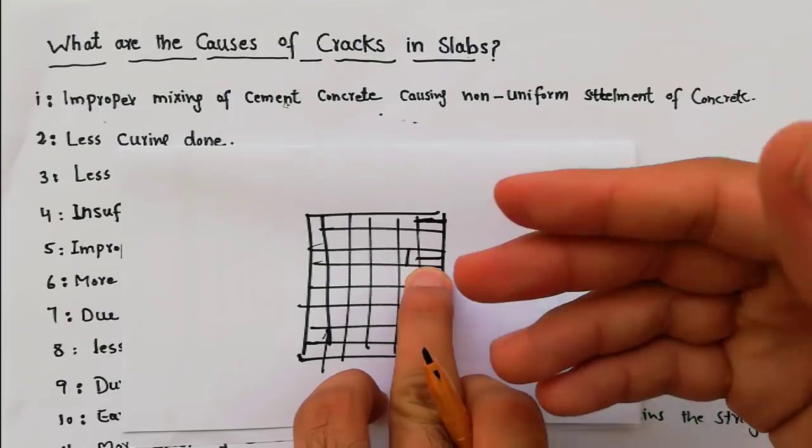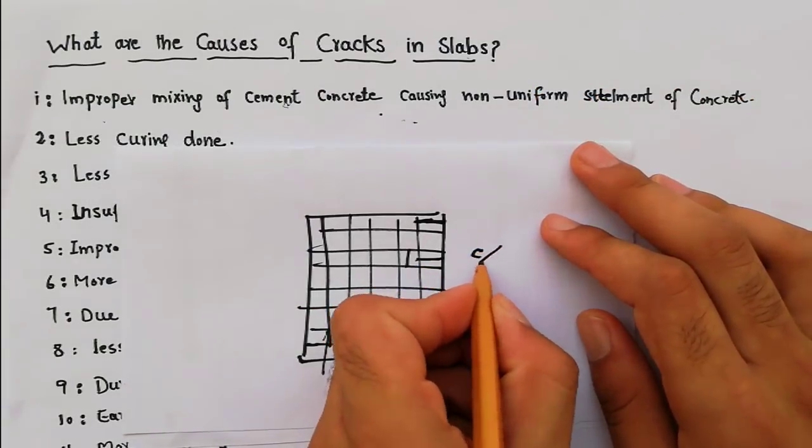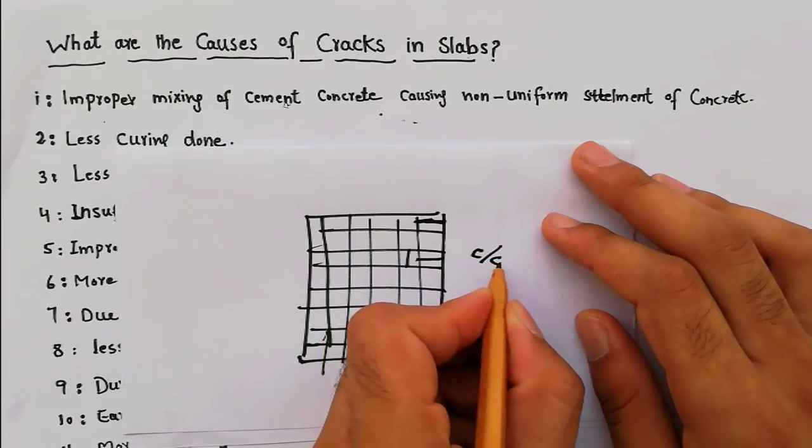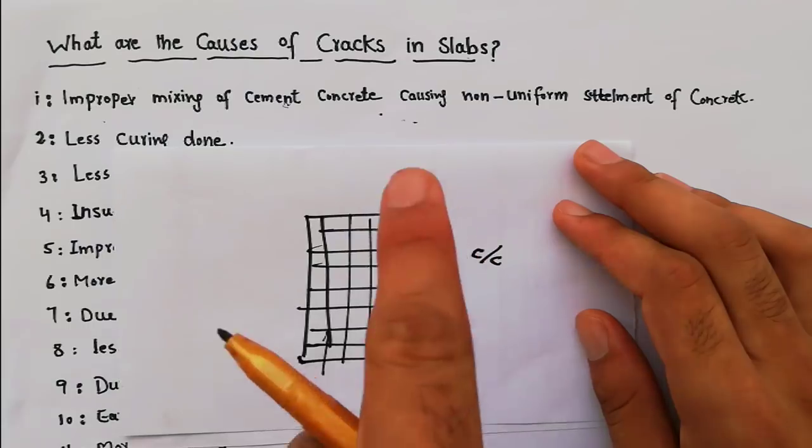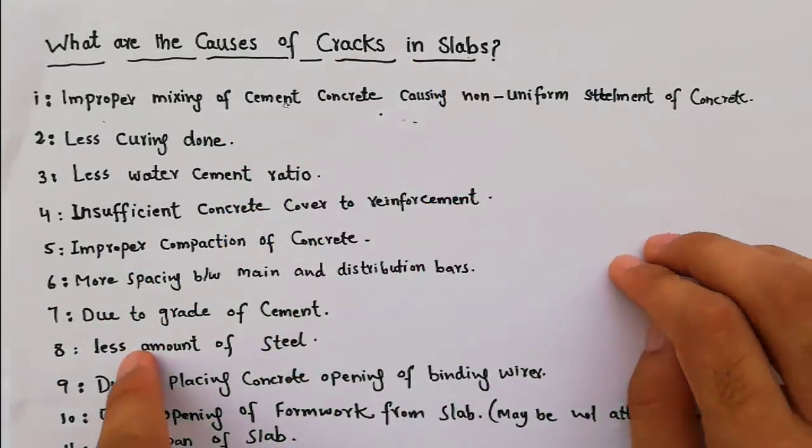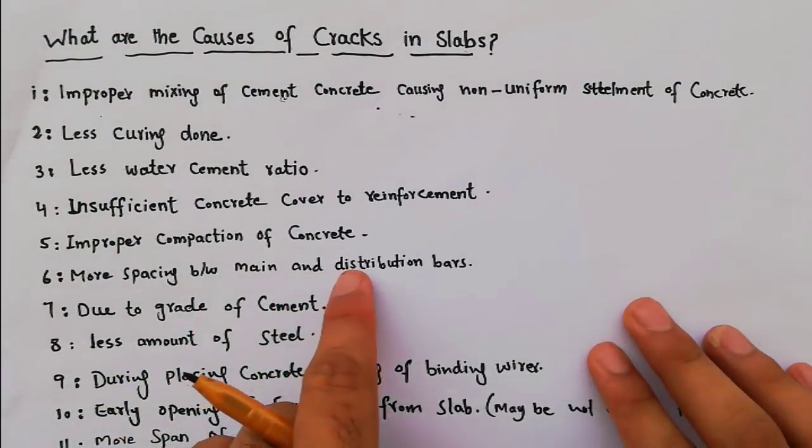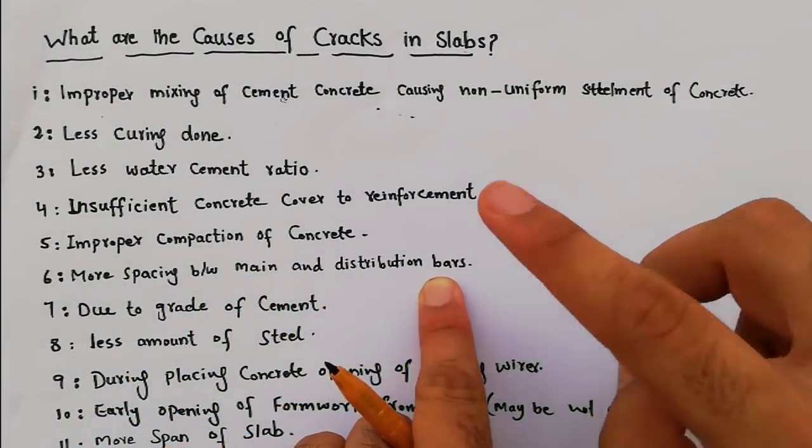more spacing which we call C/C, center to center distance - if it's more, this is also the main reason for cracks in slabs. So more spacing between main and distribution bars is a reason for cracks in slabs.